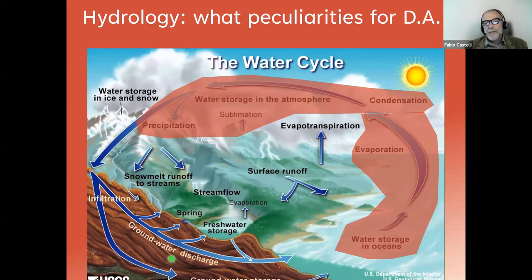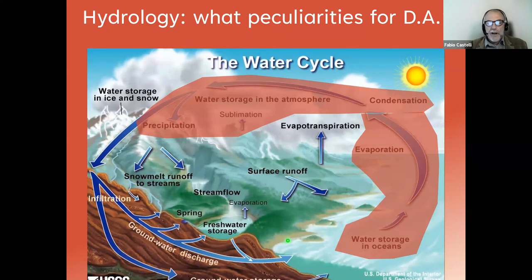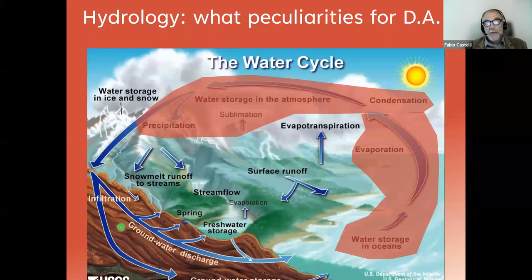Luckily enough, there are other disciplines that more deeply deal with parts of the water cycle. For example, all the atmospheric part is addressed by the atmospheric sciences community, while water storage in the oceans is addressed by oceanography. We may say, by simplifying, that what hydrologists do is deal mainly with the land part of the hydrologic cycle. But of course there are interactions with the atmosphere and the sea that need to be taken into account, and there is the complexity that the hydrologic cycle deals with both surface and below-surface processes, which are sometimes hardly observable.